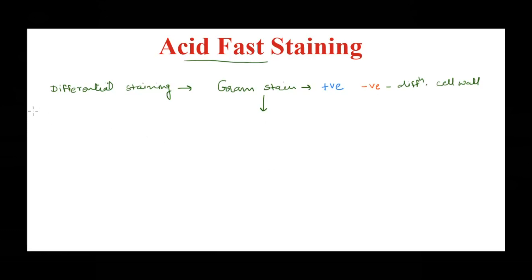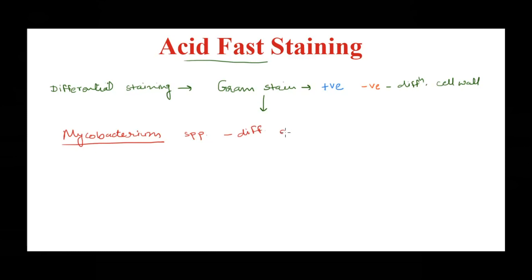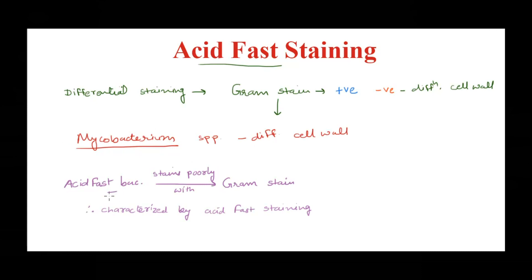For example, Mycobacterium species — Mycobacterium tuberculosis, which causes tuberculosis, and Mycobacterium leprae, which causes leprosy — these are bacteria that cannot be easily stained by gram stain. To differentiate them we use acid fast stain. Such bacteria are called acid fast bacteria, and they cannot be properly characterized using gram stain, so we use acid fast staining instead.